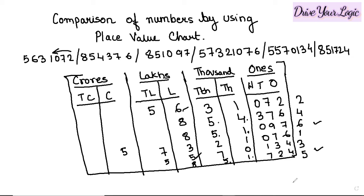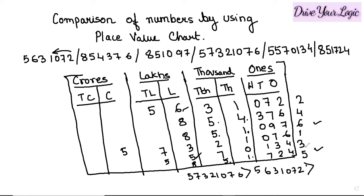So once you write down the order this way, both ascending and descending are easy. For descending order, write the numbers with greater-than signs between them. Number one is 5,73,21,076, greater than number two which is 5,63,10,72, greater than number three which is 5,55,70,134.